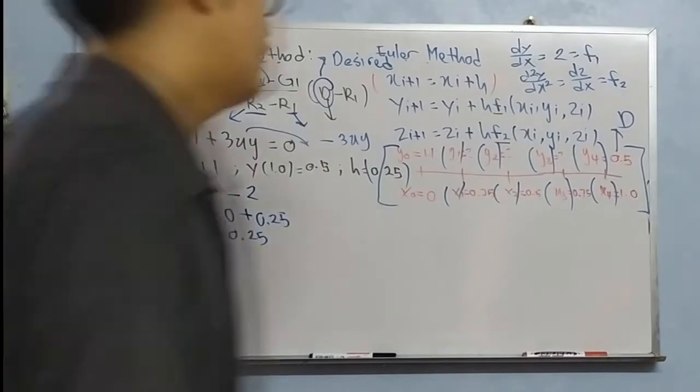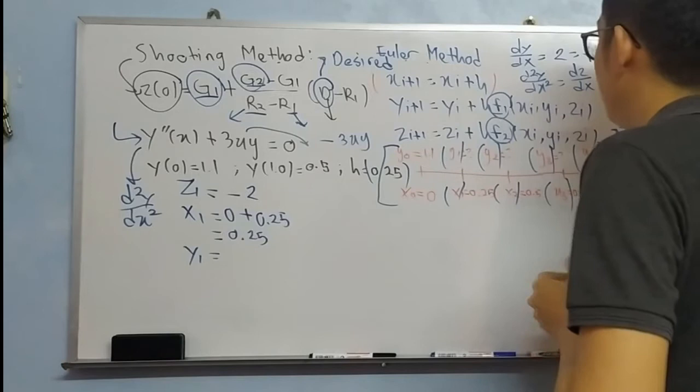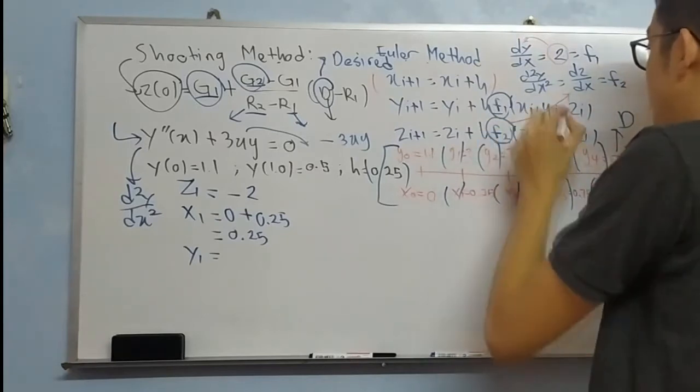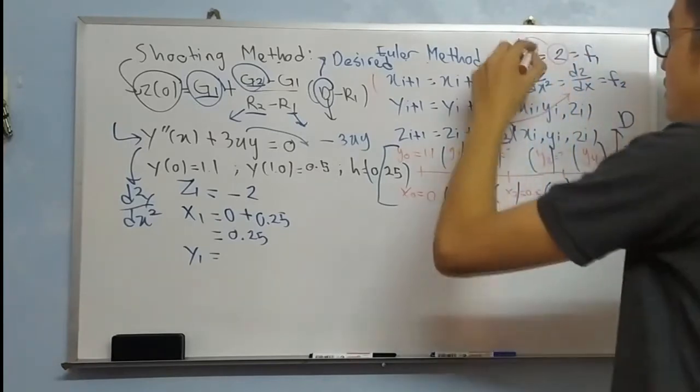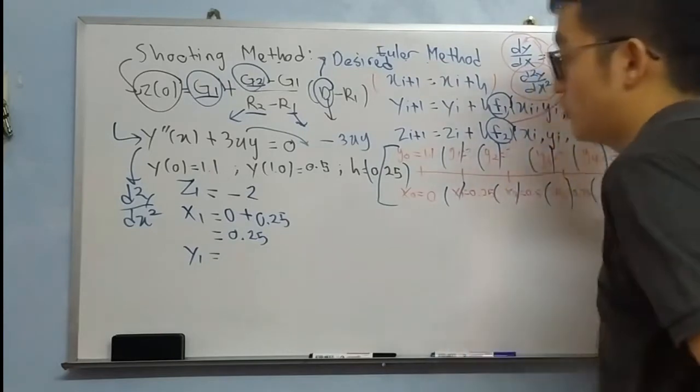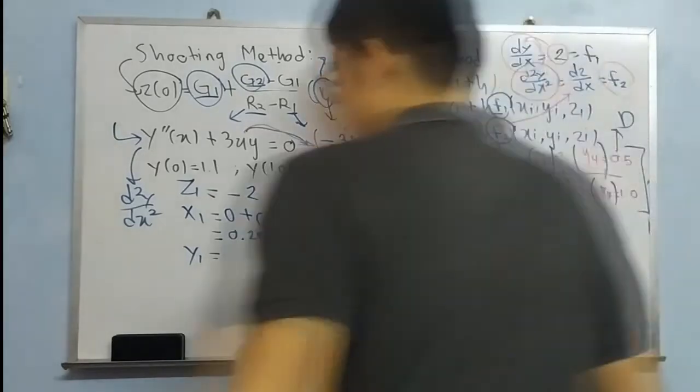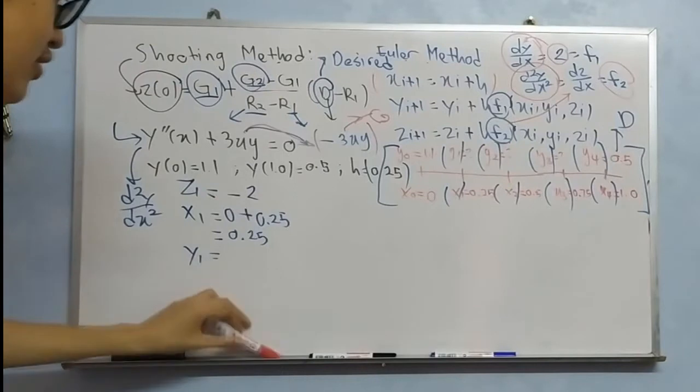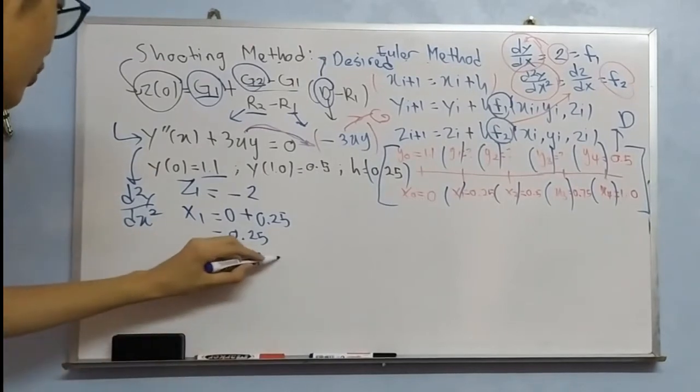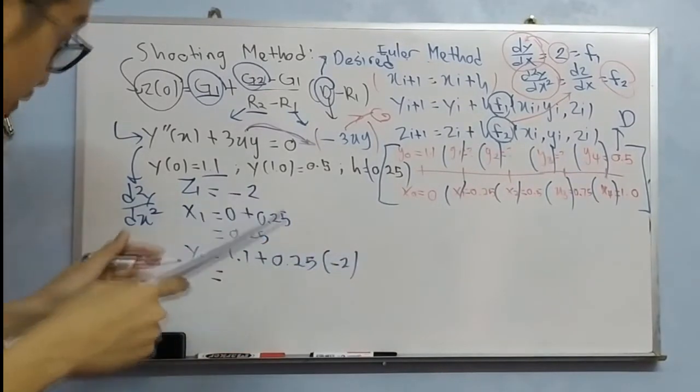For Y1, you will use function F1 and function F2. What is function F1? Function F1 is Z. Z is also dy by dx. So for function F2, we will differentiate Z, while differentiating Z, don't forget to differentiate dy by dx. So you will get second derivative and then F2. So we just move 3xy, so we get negative 3xy is F2.